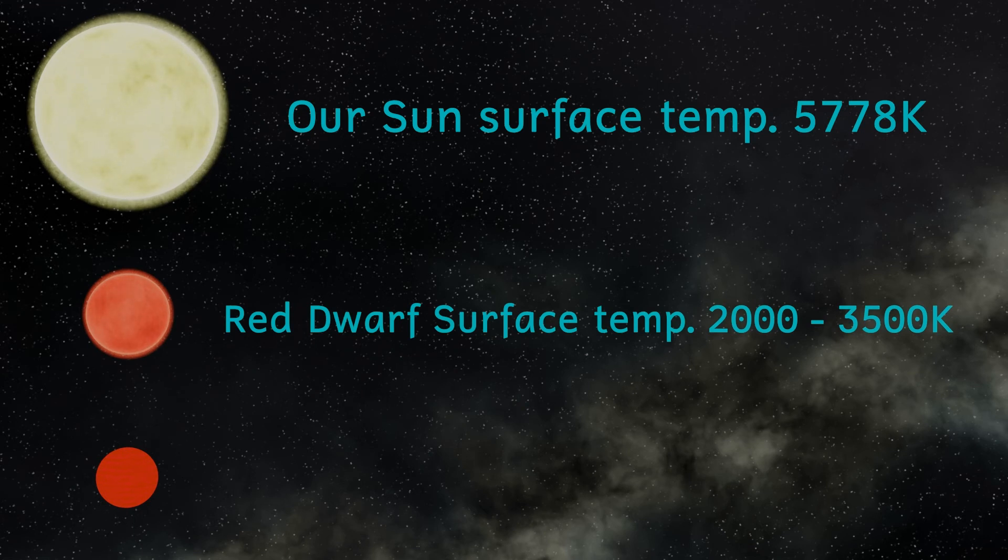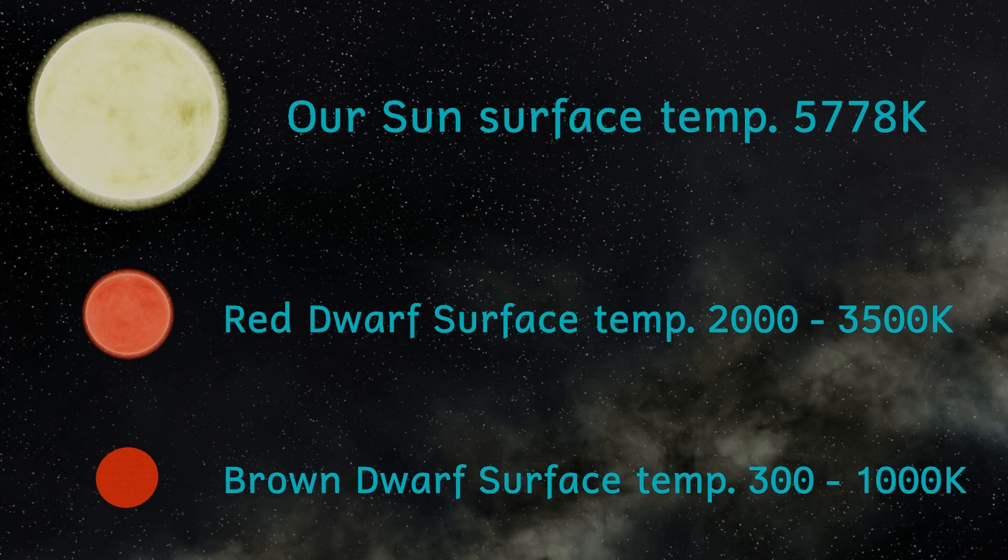Unlike more massive stars, brown dwarfs don't have enough mass to fuse hydrogen to produce their heat and light. They do however have enough mass to fuse deuterium, which is an isotope of hydrogen.